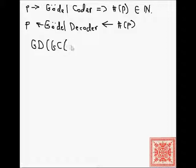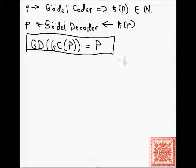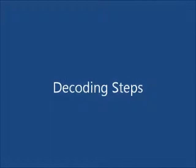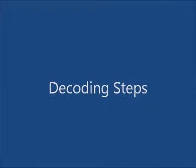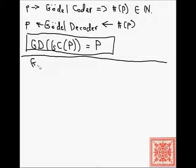The invariant is that if we take the Gödel coder and the Gödel decoder applied to the result of the Gödel coder, we're going to get the source code of the program. So that's our decoding invariant. There are several steps to Gödel decoding.